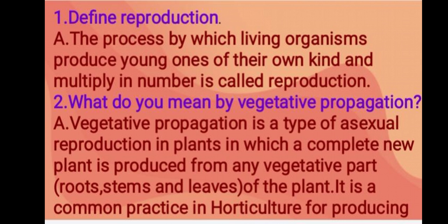Vegetative propagation is a type of asexual reproduction in plants in which a complete new plant is produced from any vegetative part — that is, stems, roots, and leaves — of the plant. It is a common practice in horticulture for producing plants.